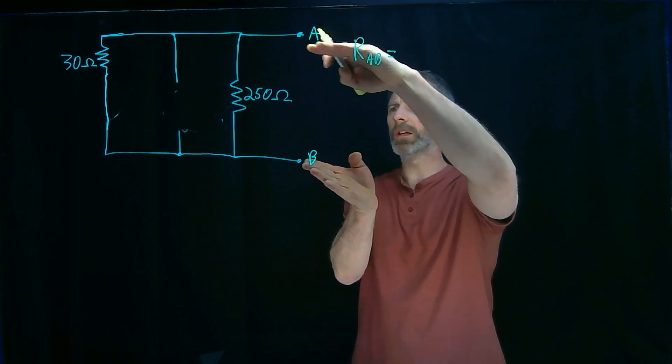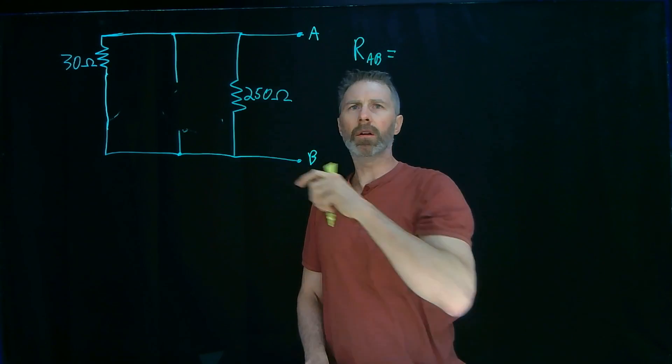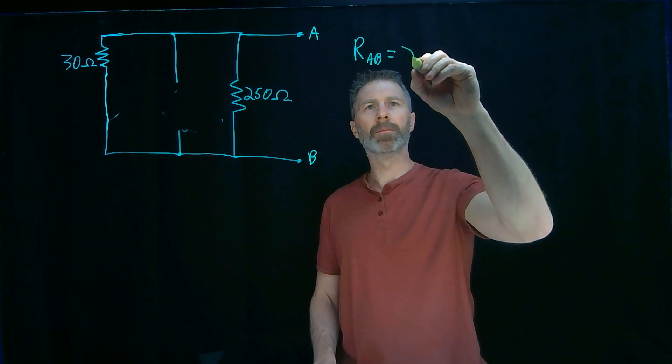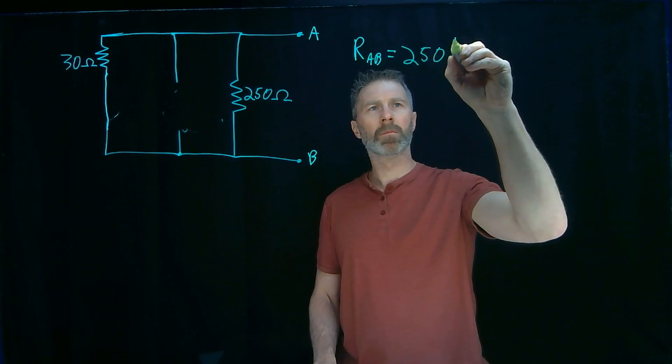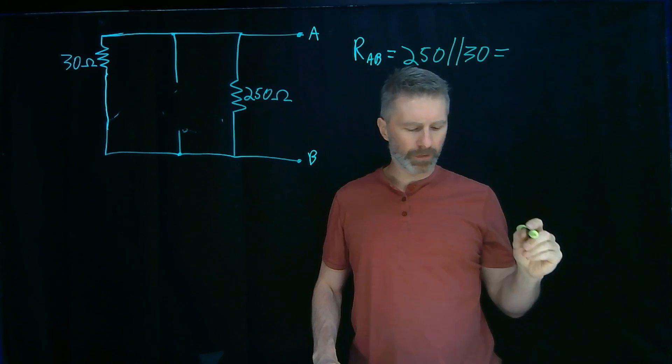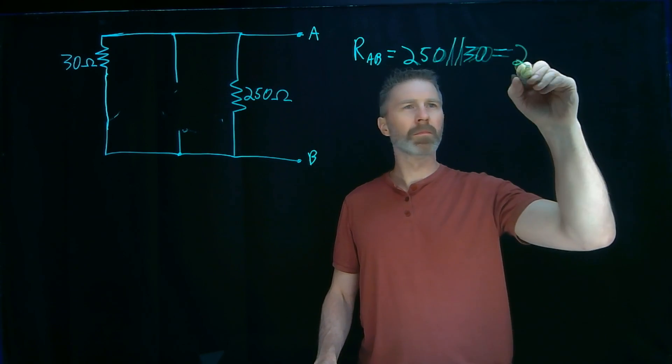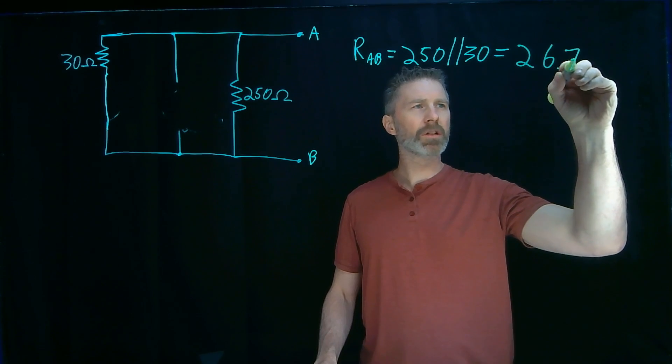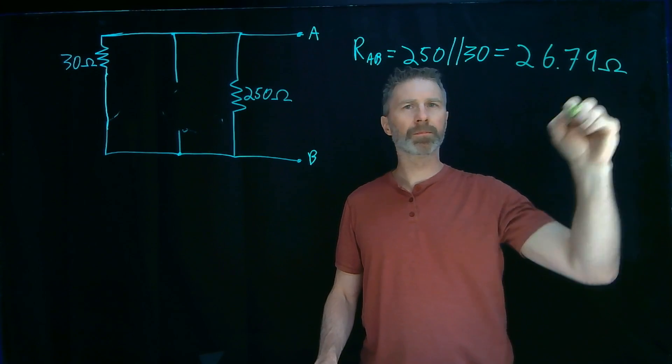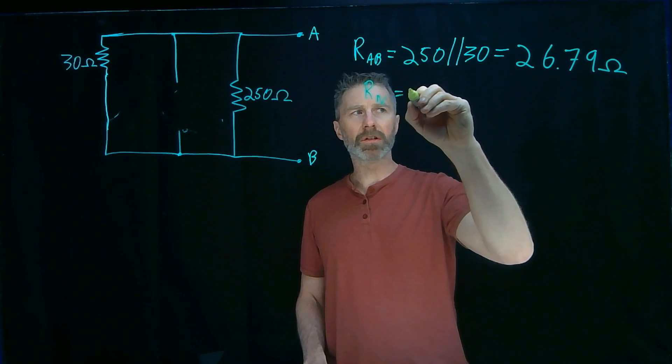I'm looking into A and B. I have a 250 ohm resistor in parallel with a 30 ohm resistor. That equivalent resistance works out to 26.79 ohms. And that is my Norton resistance.